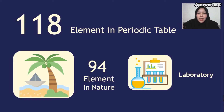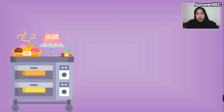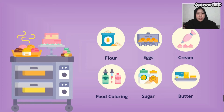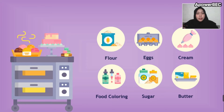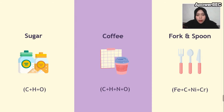118 seems like a small number to explain the whole universe, but it's actually not. Just like cookies are made of different types of ingredients, matter is also made of collections of different types of atoms. For example, one particle of sugar contains carbon, hydrogen, and oxygen. The coffee we drink every morning contains carbon, hydrogen, nitrogen, and oxygen. And the fork and spoon we use to eat also contain many elements. It is amazing!